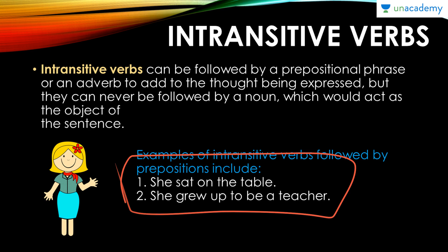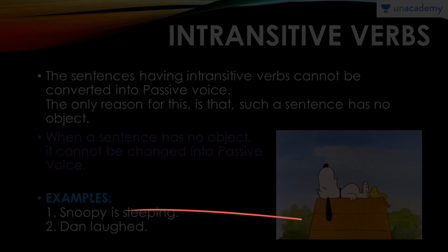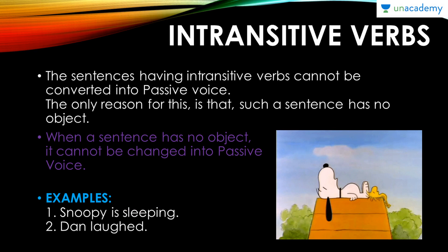So 'she sat on a table' — how will you try converting this to passive? It is impossible. The sentences having intransitive verbs cannot be converted into passive voice. The only reason is that such a sentence has no object. When a sentence has no object, it obviously can't be changed into passive voice. 'Snoopy is sleeping,' 'Dan laughed' — they are proper sentences on their own which do not require an object. They are all in active voice, but they cannot be converted into passive because they lack an object.